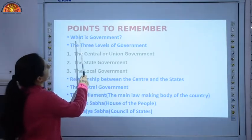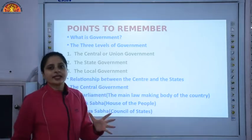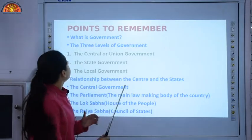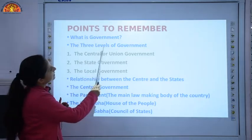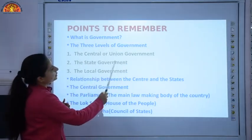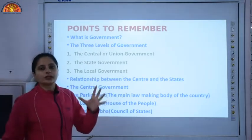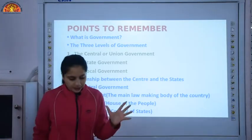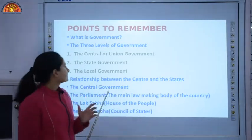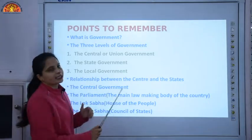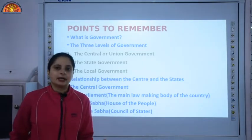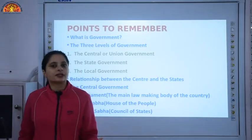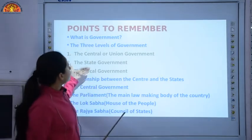First, we read about what is government. Government is a team of people who run a country. Then we learnt the three levels of government: the central or union government, which is for the entire country; the state government, which is responsible for different states; and the local government, that is for villages or towns. As it is not possible for one single government to look after the entire country, we have three levels of government.